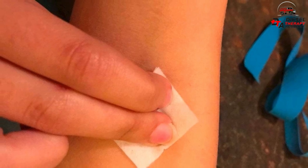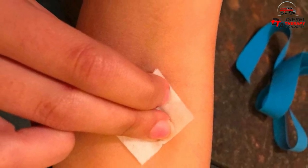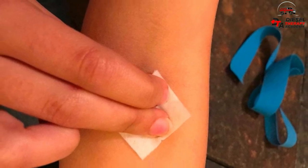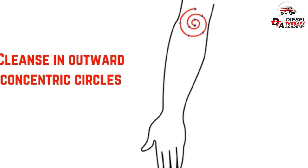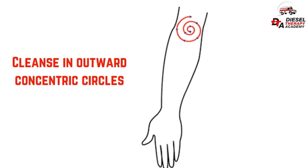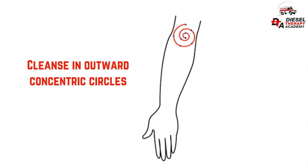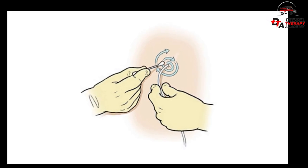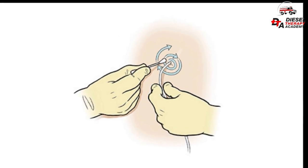Step 4: Cleanse. Cleanse the IV site to prevent bacteria and potential infections from getting into the bloodstream. Cleanse the area with an alcohol prep pad in outward concentric circles, from the insertion site outward approximately 2 to 4 inches — not back and forth, as back and forth will re-contaminate the insertion site. Allow the alcohol to dry thoroughly; do not blow on it.